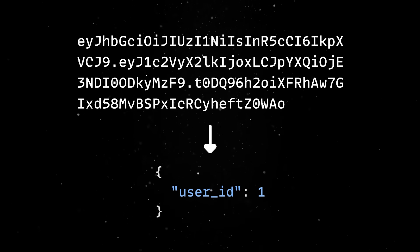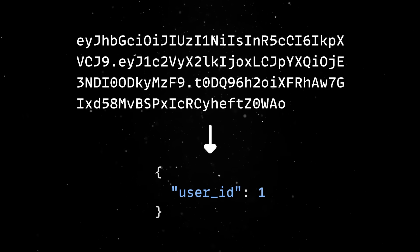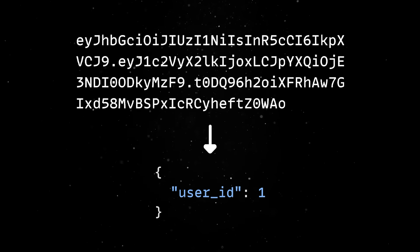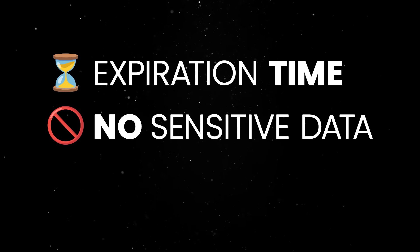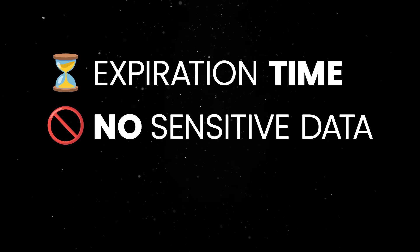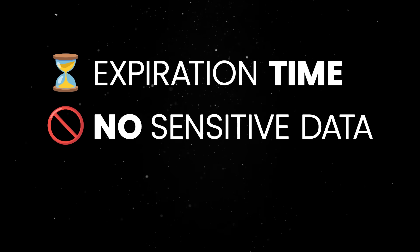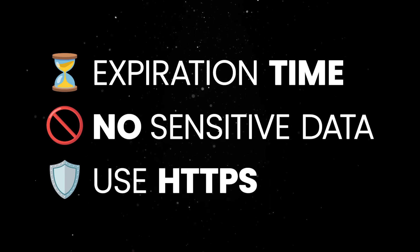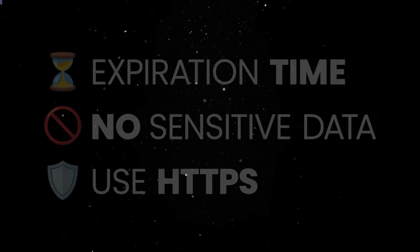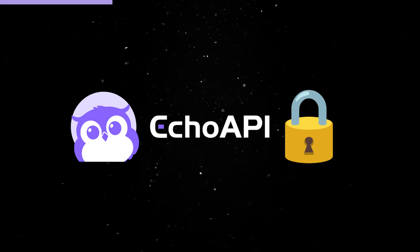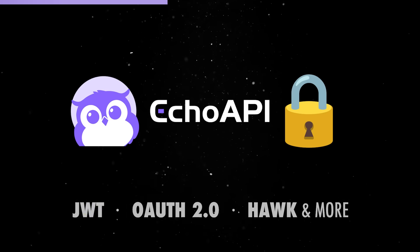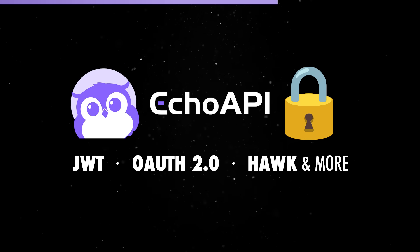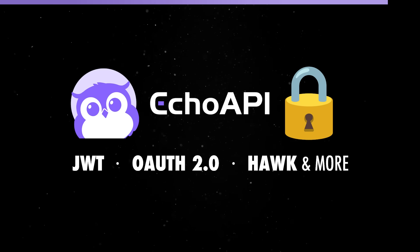However, there are a couple of important rules when working with JWTs. First, set an expiration time to prevent long-lived tokens from being exploited. Second, you should not store sensitive information inside the token, as anyone with access to it can decode the payload. And finally, all communication should happen over HTTPS. Echo API makes securing your API a breeze with support for multiple authentication methods, so don't forget to check them out at the link below.